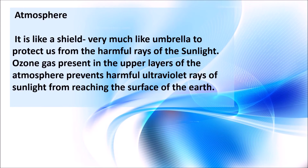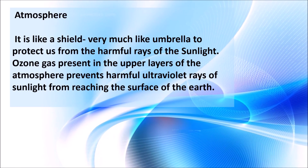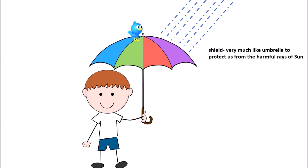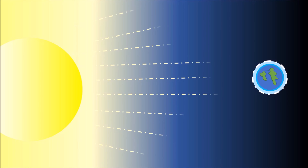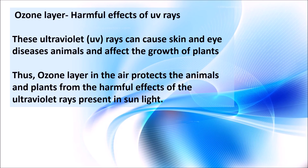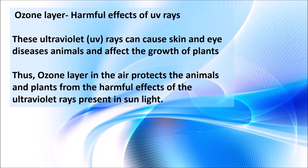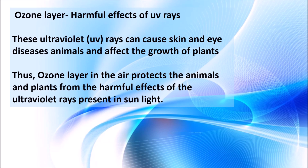Most of us must have heard the word atmosphere. Our atmosphere acts as a shield, very much like an umbrella, to protect us from the harmful rays of sunlight. Ozone gas present in the upper layers of the atmosphere prevents harmful ultraviolet rays from reaching the surface of the earth. These ultraviolet rays can cause skin and eye diseases in animals and affect the growth of plants. Thus, the ozone layer protects animals and plants from the harmful effects of ultraviolet rays present in sunlight.